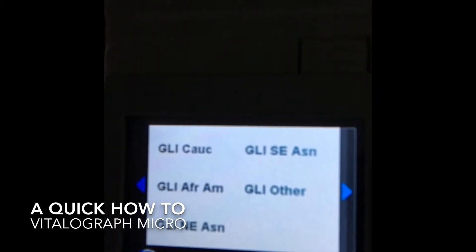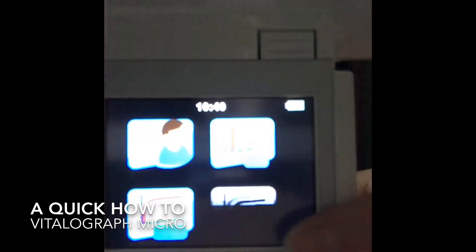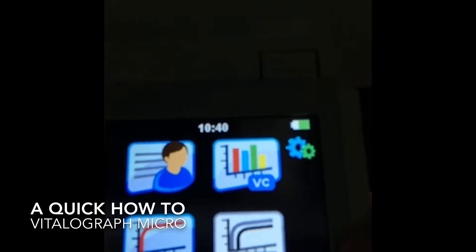So once your predicted calculation has been set, then you simply push the green button and enter, enter, enter, all the way back to our home screen, and now we are ready to test.